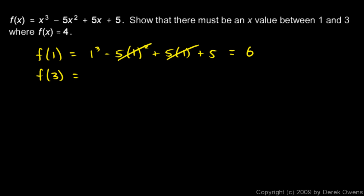And f of 3 is 3 cubed. I'll work this out as I go. 3 cubed is 8 minus 5 times 3 squared. That's 5 times 9. That's 45 plus 5x. That's 5 times 3 is 15 plus 5. And whoops, there's a mistake there.